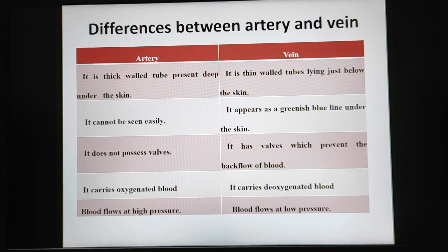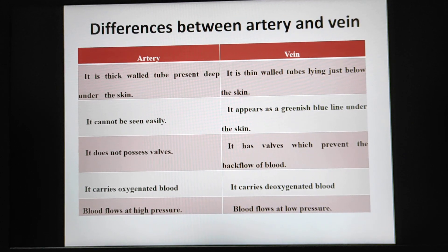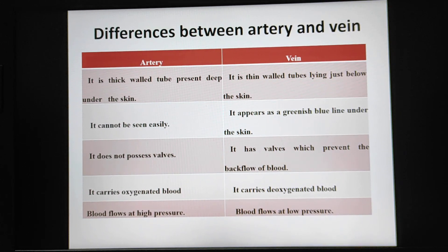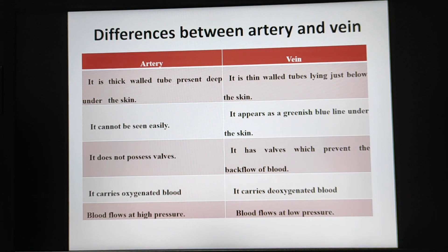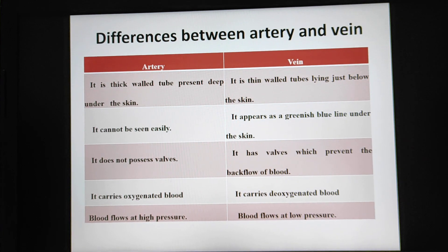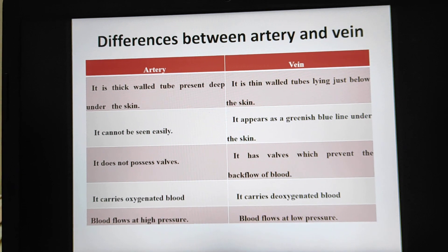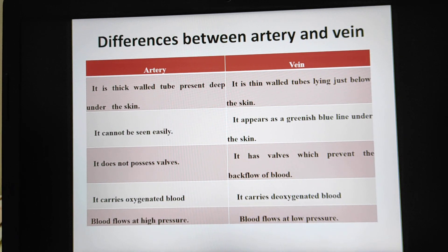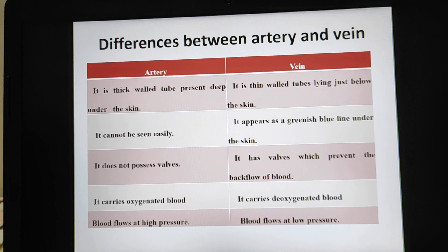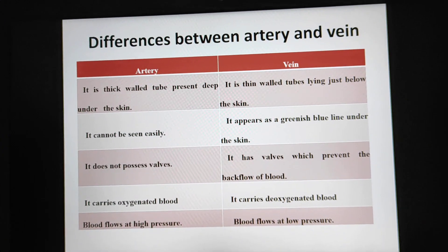As you can see, arteries have thick walls and veins have thin walls. Arteries lie deep under the skin and veins lie just below the skin. Arteries cannot be seen easily and veins appear as a greenish-blue line under the skin. Arteries do not possess valves and veins have valves. Arteries carry oxygenated blood and veins carry deoxygenated blood. In arteries, blood flows at high pressure and in veins, blood flows at low pressure.